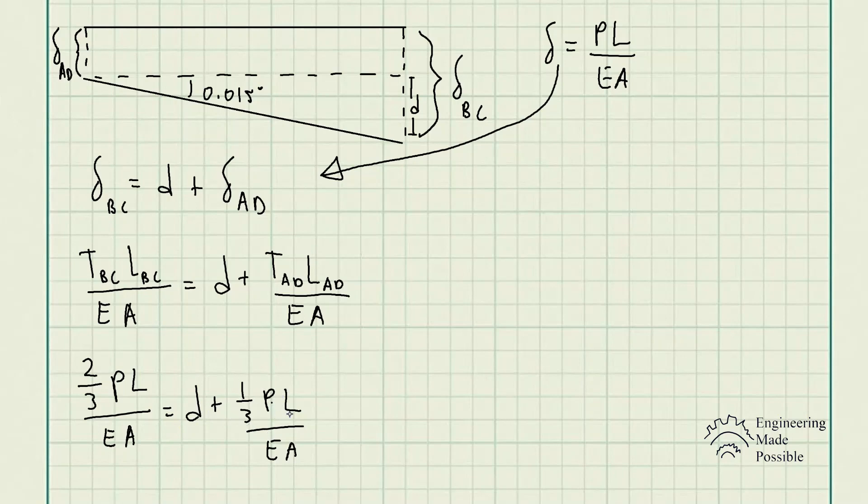We get P to one side of the equation, factor out, and basically have this formula to solve for P. After moving things around and factoring, we get P is equal to three times d times EA divided by the length of the cables.